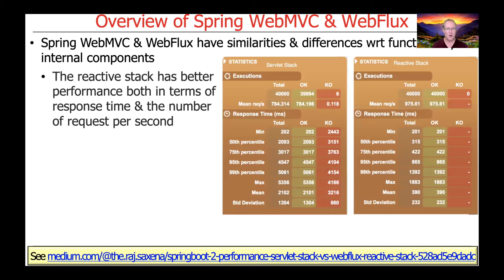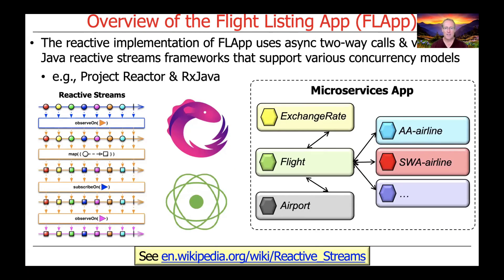As a general rule of thumb — your mileage may vary — the reactive approach has better performance in terms of response time and requests per second. The main reason is the non-blocking model works much better with thread pools, which map nicely onto underlying cores. The reactive implementation of the flight listing app uses asynchronous two-way calls and the Java Reactive Streams framework to support multiple concurrency models. The architecture uses several microservices that can be accessed in a totally asynchronous way.